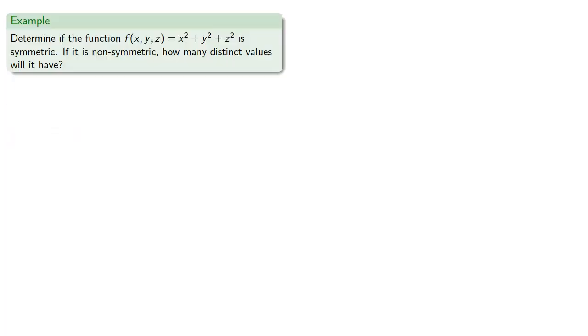Let's determine if our function is symmetric. And if it's non-symmetric, how many distinct values will it have? Well, we've already determined that this function is invariant under all permutations. And so, there's only one function value, namely x squared plus y squared plus z squared.